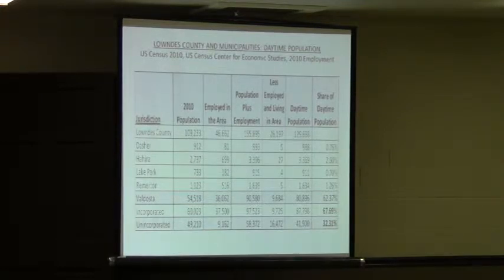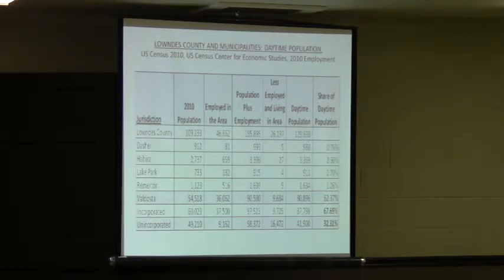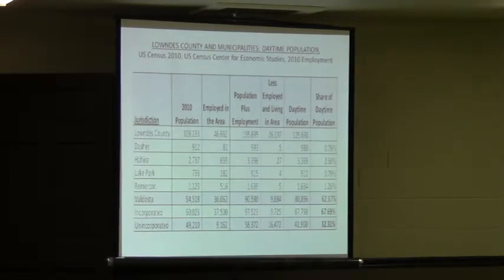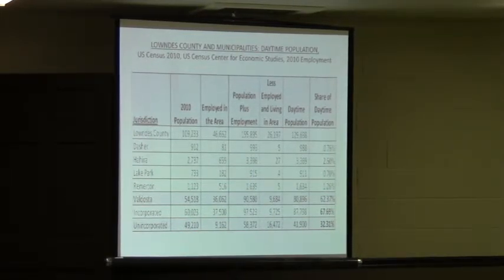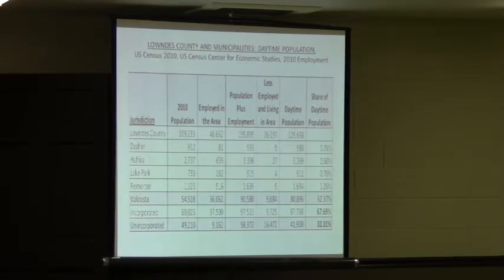That's data we can mine locally through the local school boards, through Wiregrass Tech, and so forth, as to where their students are coming from. But the measurement you see on the screen is based on census data — it is a comparison of nighttime population, where people live and reside, as compared to where people work after the morning commute.